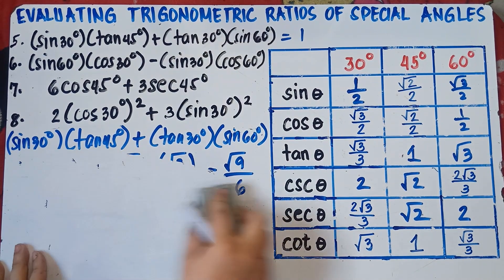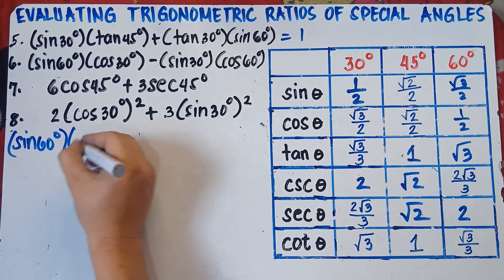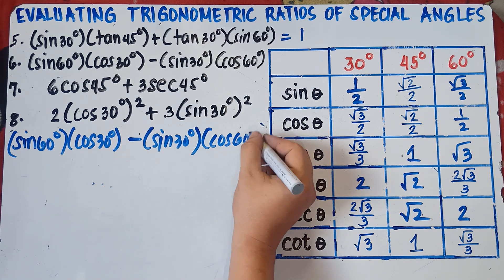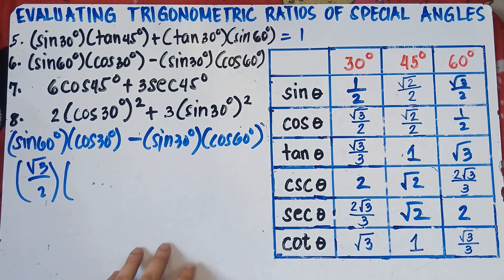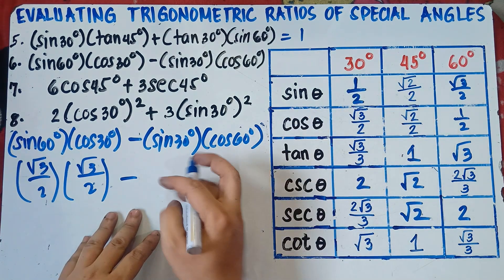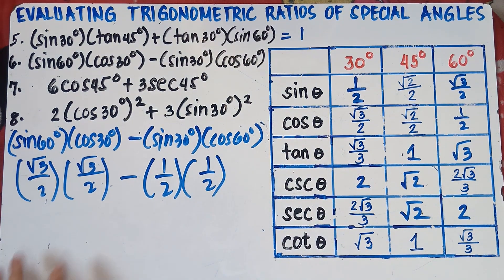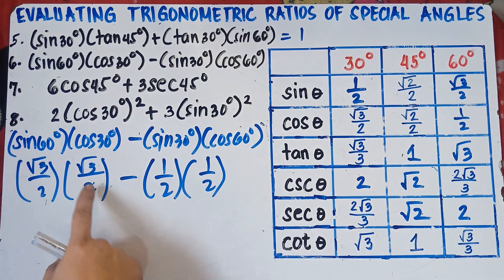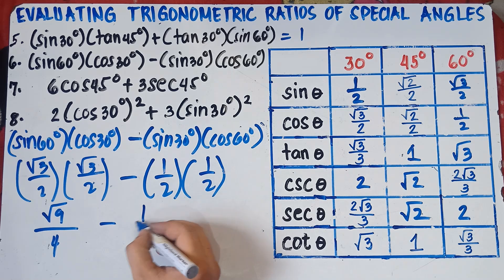Let's try number 6: sine 60 degrees times cosine 30 degrees, minus sine 30 degrees times cosine 60 degrees. Sine 60 degrees is √3/2, cosine 30 degrees is √3/2, sine 30 degrees is 1/2, and cosine 60 degrees is 1/2. Multiply first before subtracting: √3 times √3 is √9, and 2 times 2 is 4. For the second part: 1 times 1 is 1, and 2 times 2 is 4.